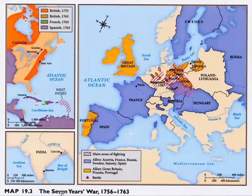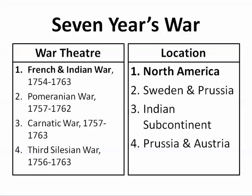The Seven Years' War is a bit of a misnomer because it actually lasted close to 10 years. Great Britain allied with the original colonies, Portugal, and Prussia, while France allied with Spain, Austria-Hungary, Sweden, and Russia. The Seven Years' War also happens in India. It is larger than just the French and Indian War, although the French and Indian War starts it. We see four theaters of war: the French and Indian War in North America from 1754 to 1763, the Pomeranian War in Sweden and Prussia, the Carnatic War on the Indian continent, and the Third Silesian War in Prussia and Austria.